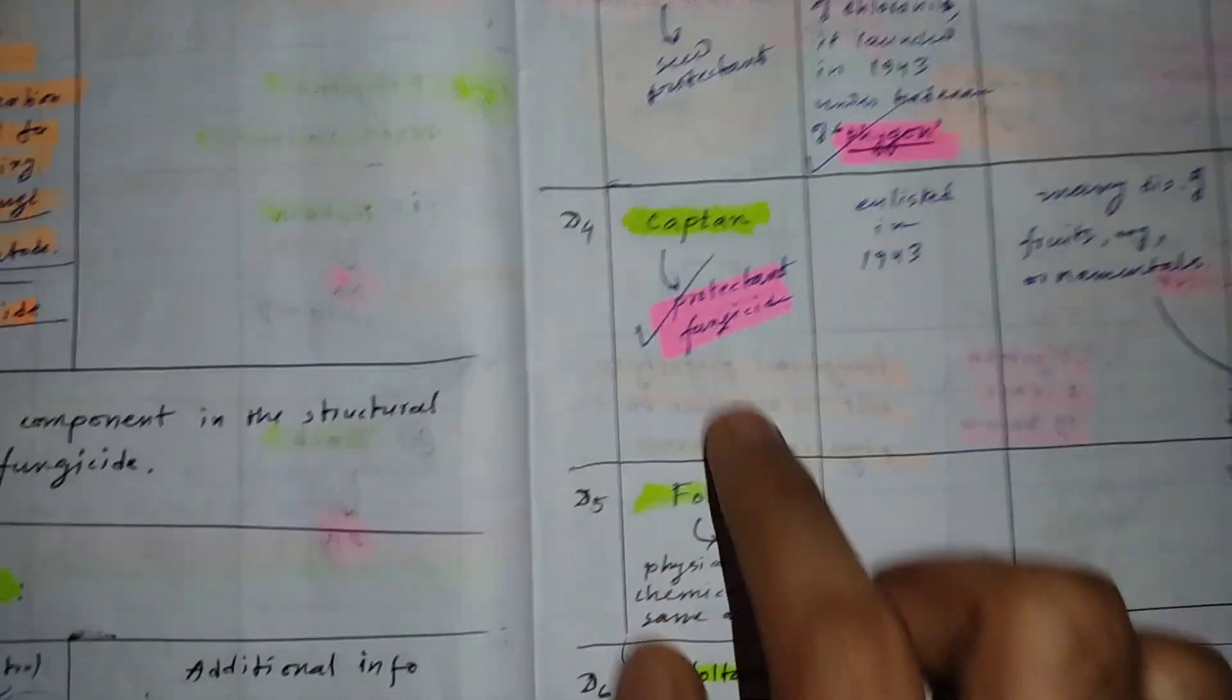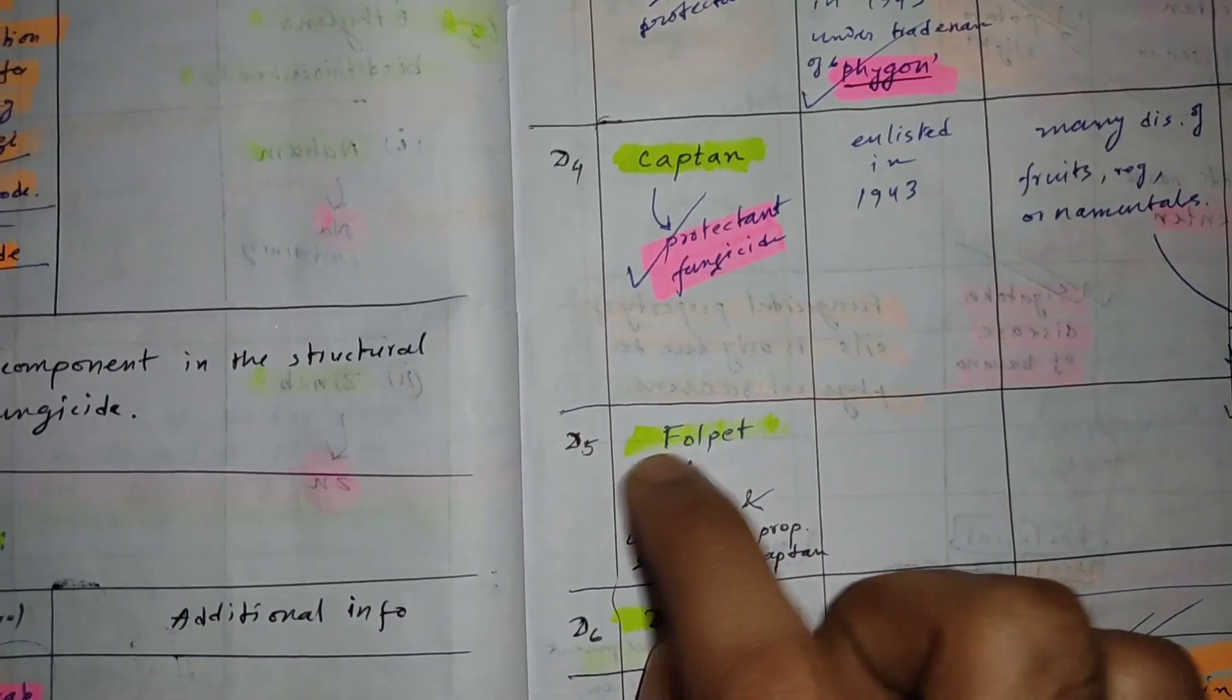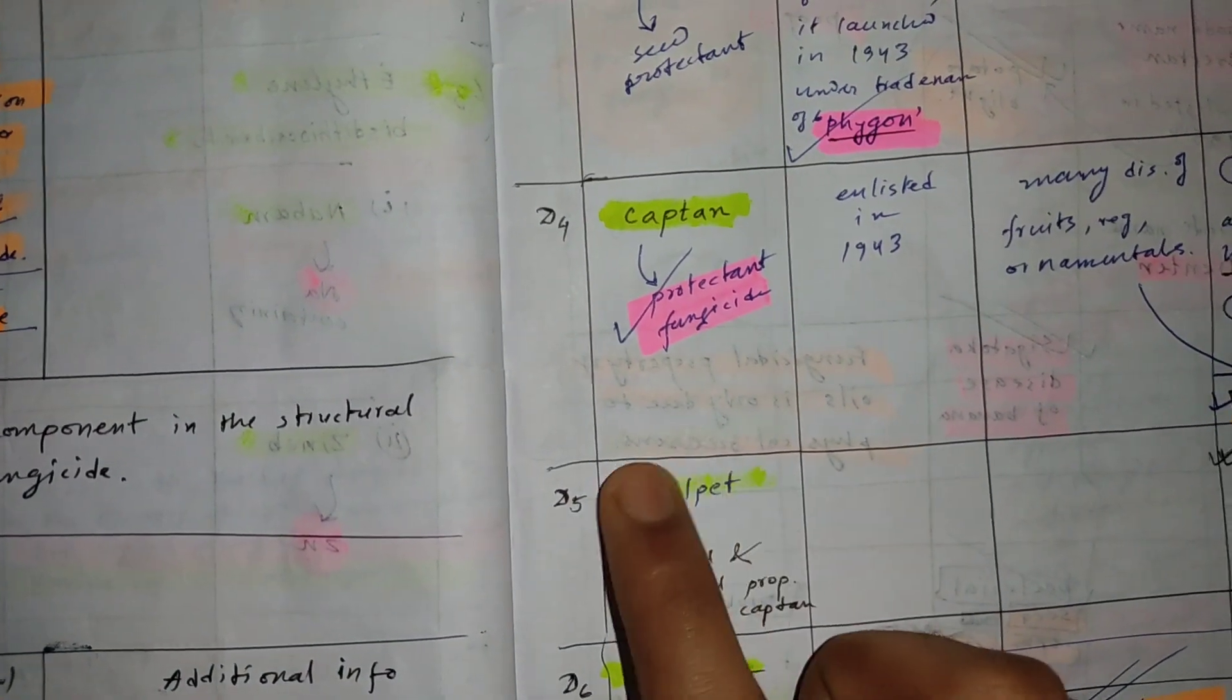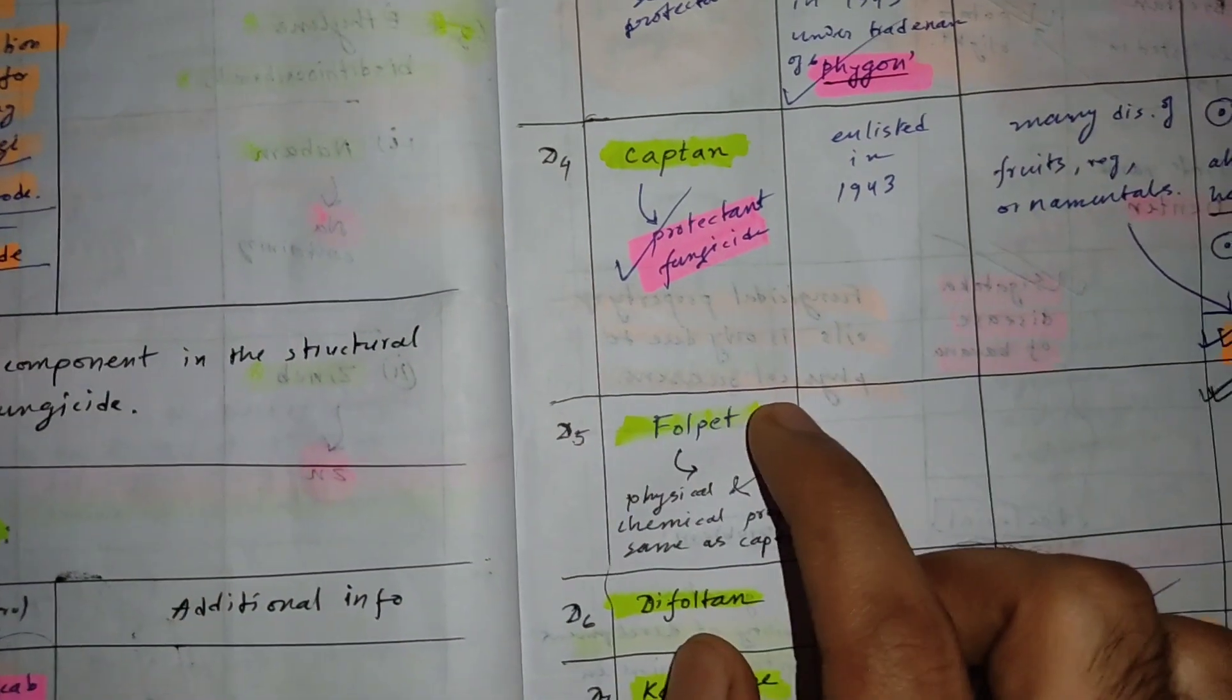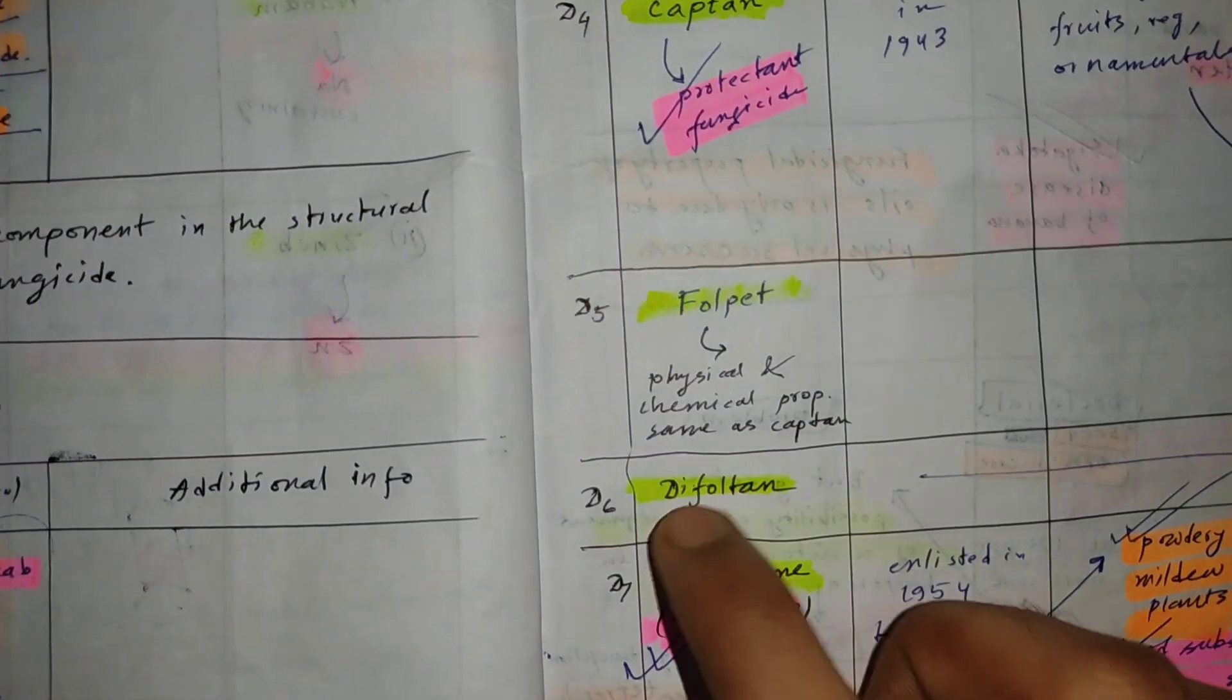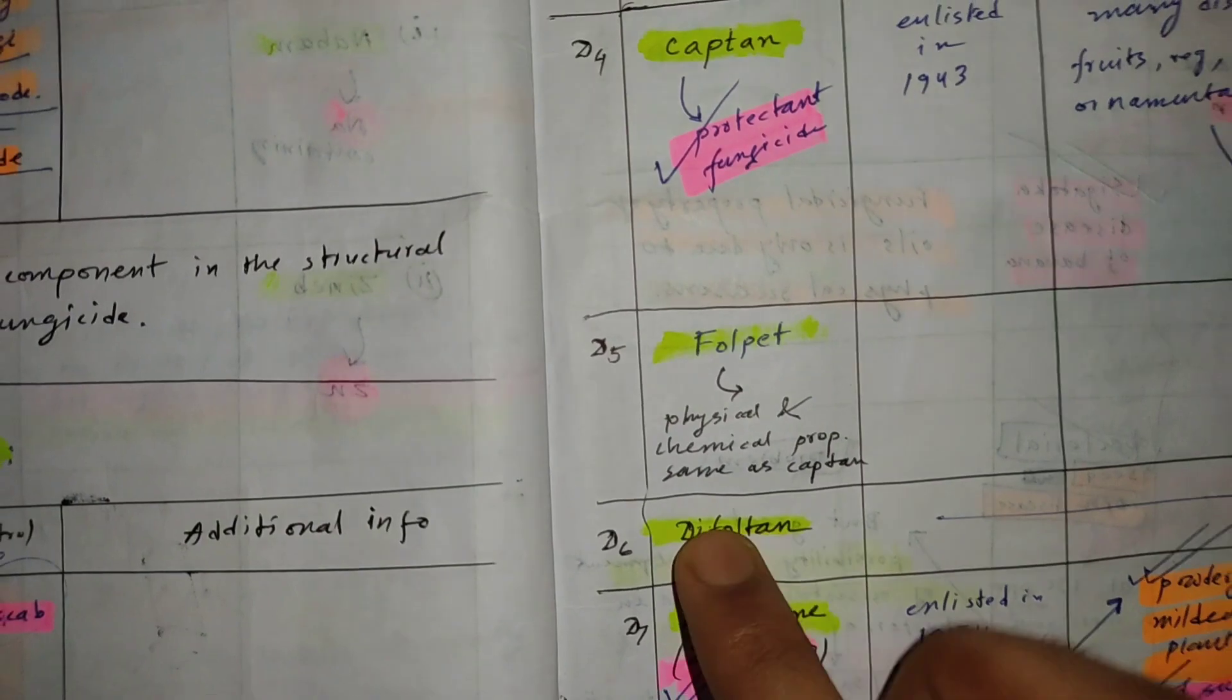For example, suppose there is one captain who comes into your home to visit you. You give him some folpet fruits to eat. Folpet pet pet kar ke fol kha liya, phir do fol leke chala gaya—dodine fol ton. You can easily remember like this.